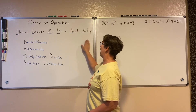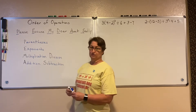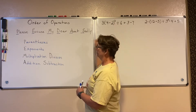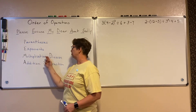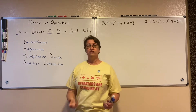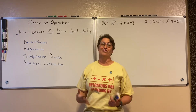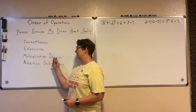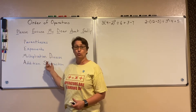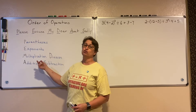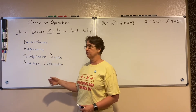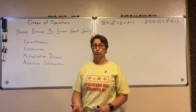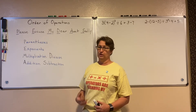Then we're going to look at our exponents and perform those — like this exponent here. Then we're going to do our multiplication and division. Notice that multiplication and division are on the same line, because we're going to do them from left to right — whichever one comes first. Then we do addition and subtraction, also from left to right.